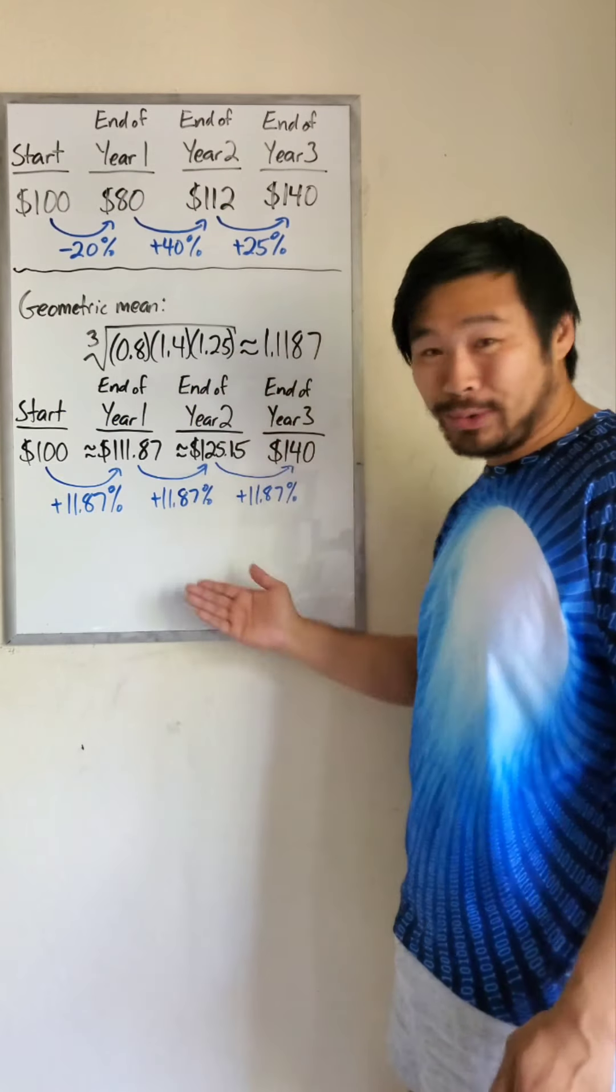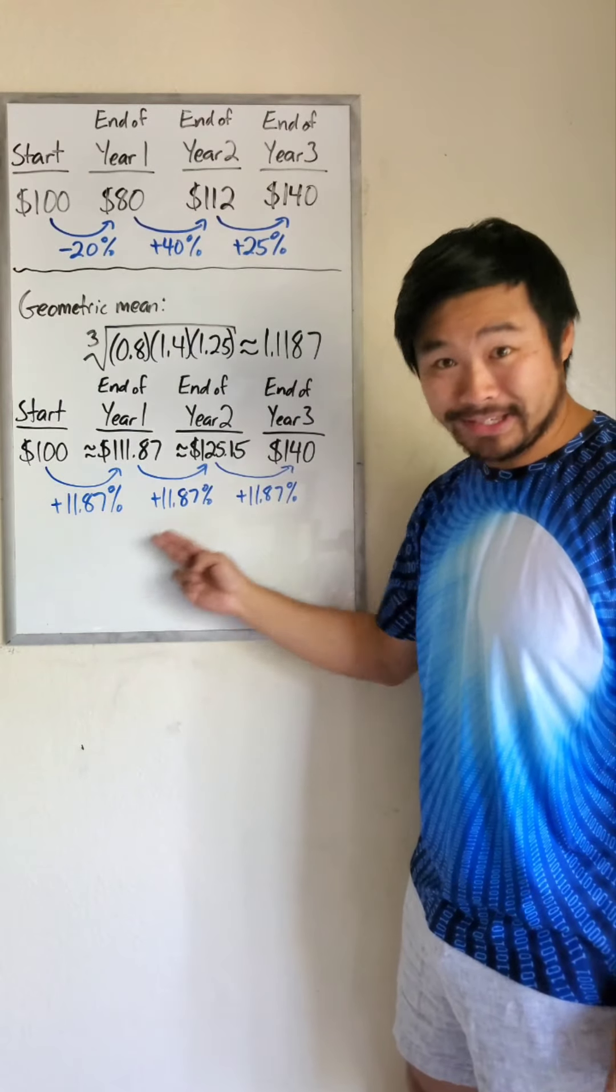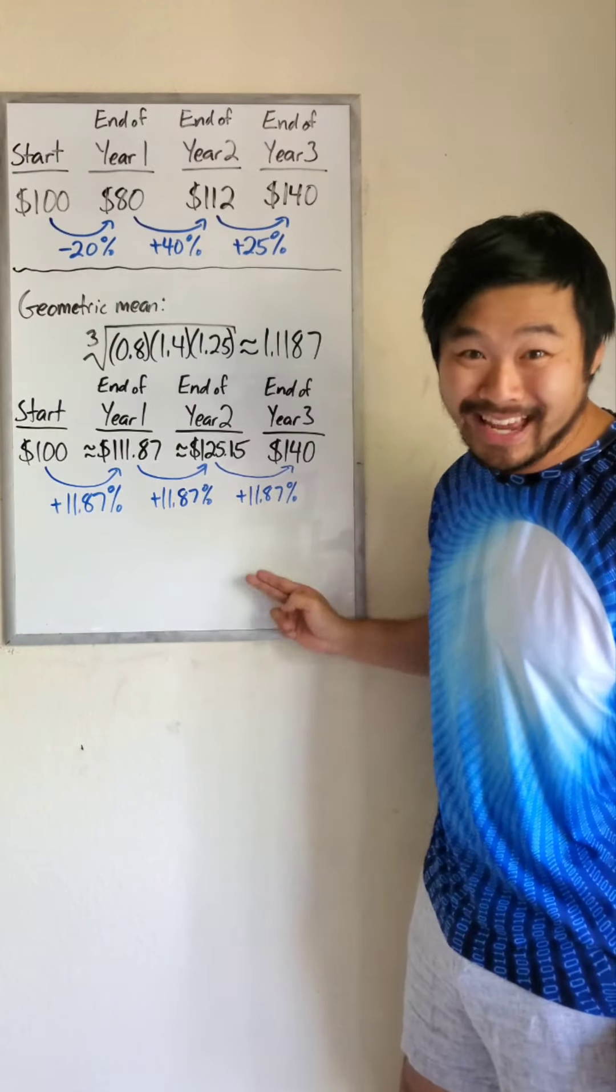And we can do this with three or more numbers. So when we are constantly multiplying, when things are compounding, when these percentages have to be the same, we would use the geometric mean instead of the arithmetic mean.